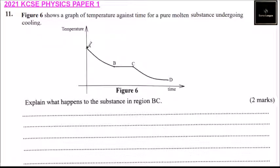We have A to B where there is decrease in temperature. From B to C, there is no change in temperature. From C to D, there is decrease in temperature. This is temperature and that is time.